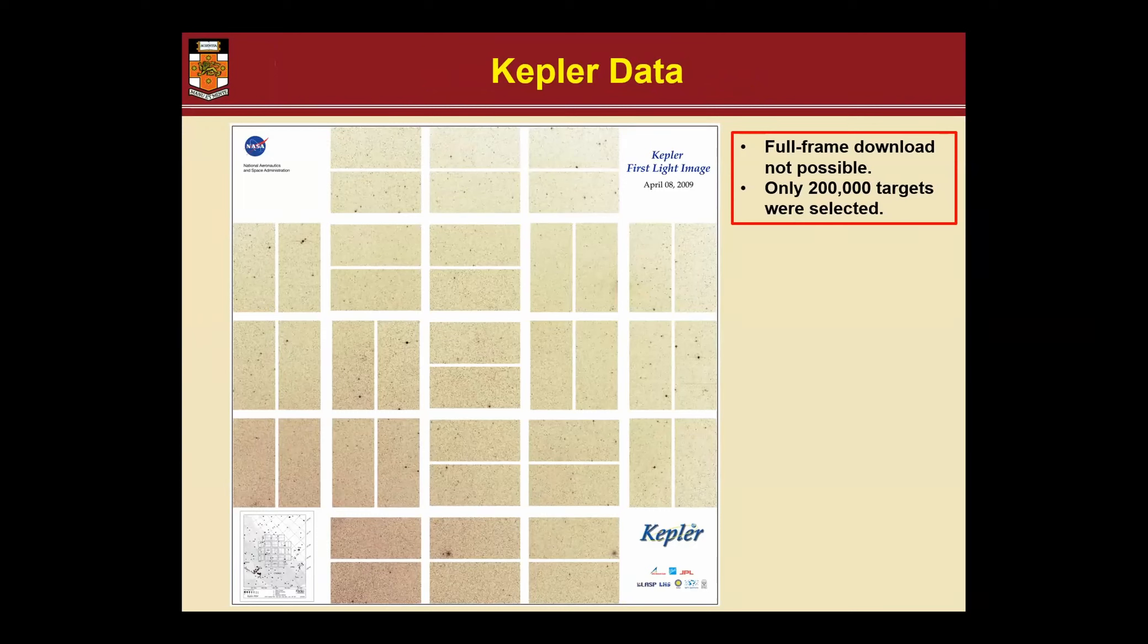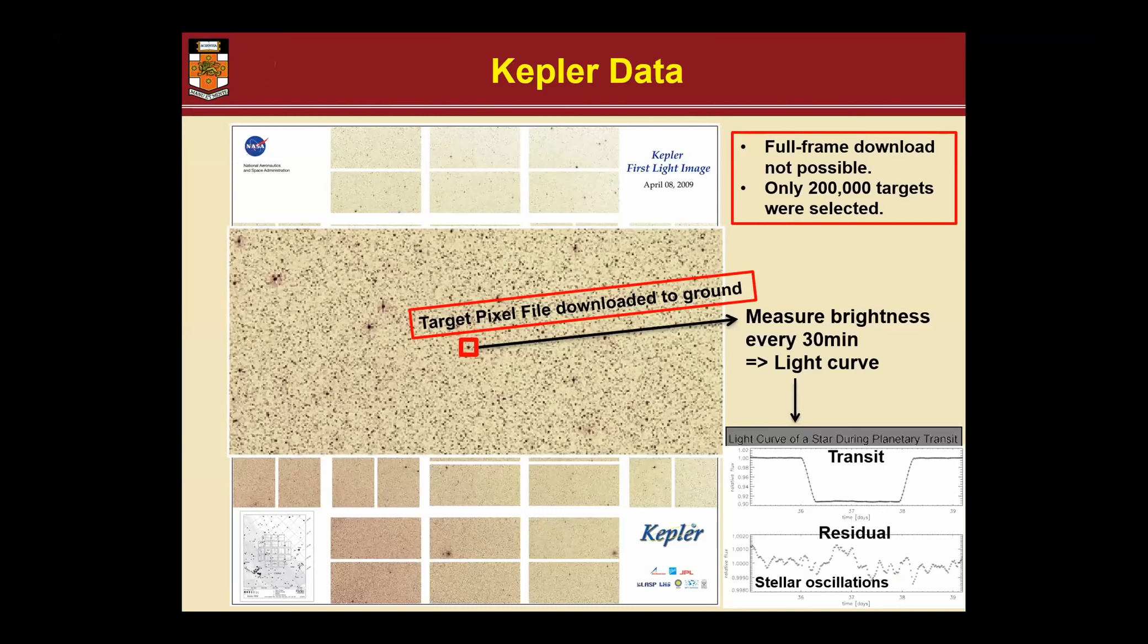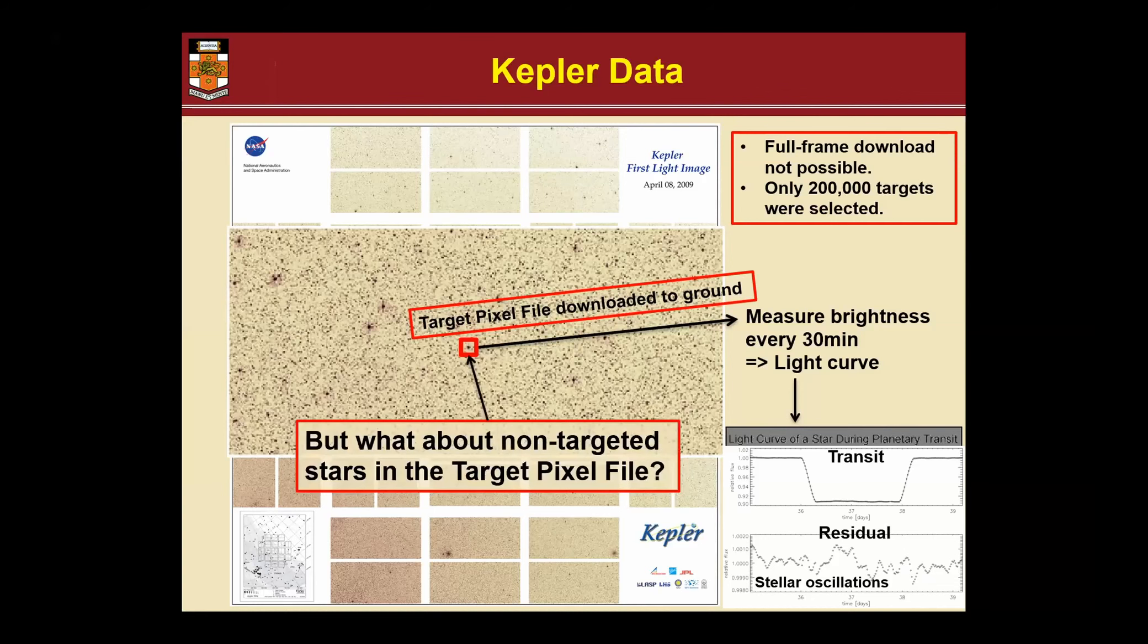What the Kepler team did was they selected 200,000 stars for which they wanted the data. They'd say okay, which ones are the interesting ones based on the input catalog of Kepler, which was photometry based from ground-based Gaia, and therefore download small what's called time pixel files - basically 10 by 10 pixels around each target. They were stored and then downloaded and the photometry was made on ground, creating beautiful light curves showing transits when you were lucky if you're a planet person, or if you're unlucky if you're a stellar person because you want that away - you remove that transit you see as residual, and that's the oscillations we really want. You can kind of see there, but they're obviously much smaller amplitude.